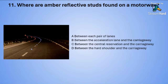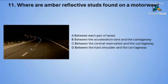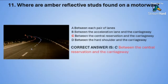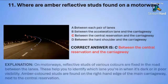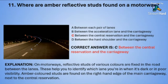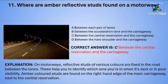The correct answer is C — between the central reservation and the carriageway. On motorways, reflective studs of various colours are fixed in the road between the lanes. These help you identify which lane you are in when it's dark or in poor visibility. Amber-coloured studs are found on the right-hand edge of the main carriageway next to the central reservation.